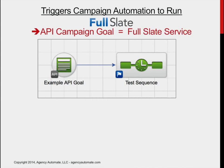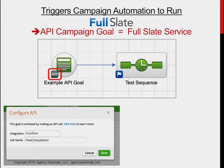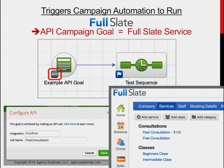Same thing for FullSlate. There's our campaign goal — it's of type API. Open it up: it's a confirm and a Free Consultation in FullSlate. The service I want to integrate is the Free Consultation, so I'm using the same name under the API goal. That's how we integrate FullSlate into Infusionsoft so that TimeFusion will trigger your campaign goals to run.